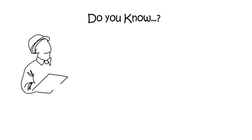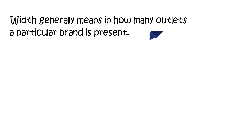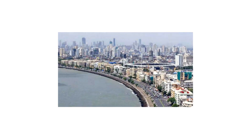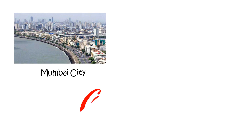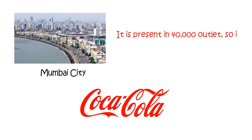Good sales analytics functions operate by improving distribution or sales strength by its width and depth. Width generally means in how many outlets a particular brand is present. For example, in Mumbai city, assume there are 50,000 outlets. If Coca-Cola is present in 40,000 of those outlets, then its width is 80%.